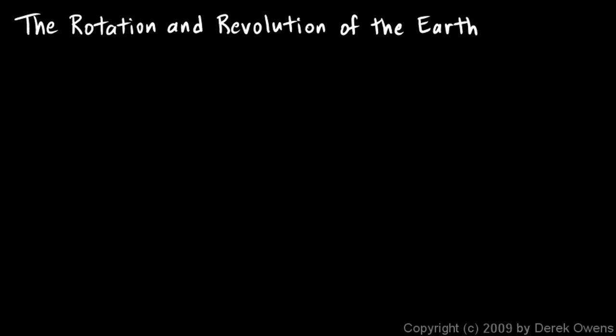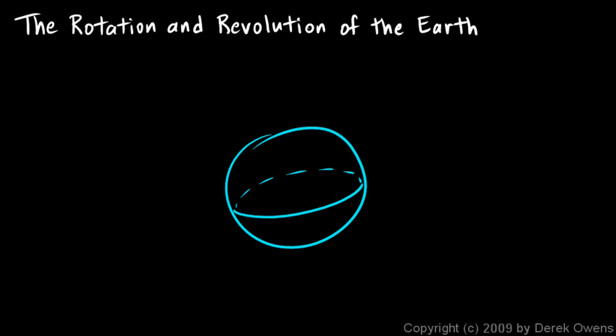Now we're going to talk about the rotation and the revolution of the earth and some related concepts. We've already said that the earth rotates on its axis. Here's the earth and this is the equator. The axis of the earth is this imaginary line that runs through the center, and the earth spins about on its axis like that.